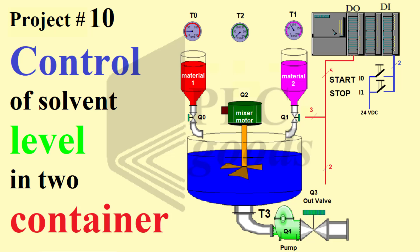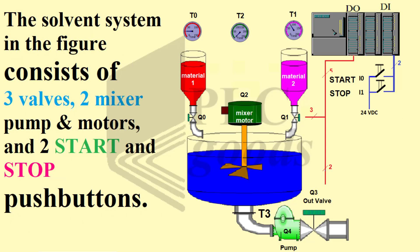Hello, everyone. In this project, we would like to write a PLC program to control solvent levels in two containers, as shown in the figure on the right, based on the following conditions. The solvent system in the figure consists of three valves, two motors — mixer and pump — and two start and stop push buttons.